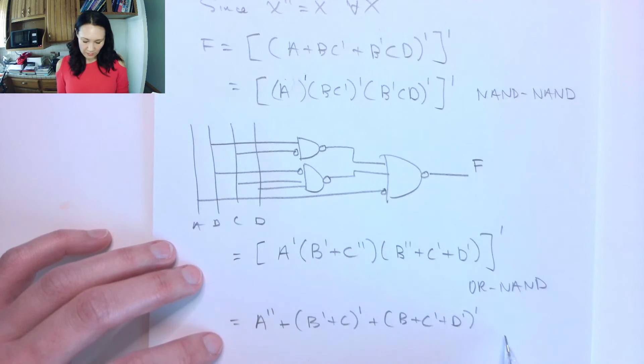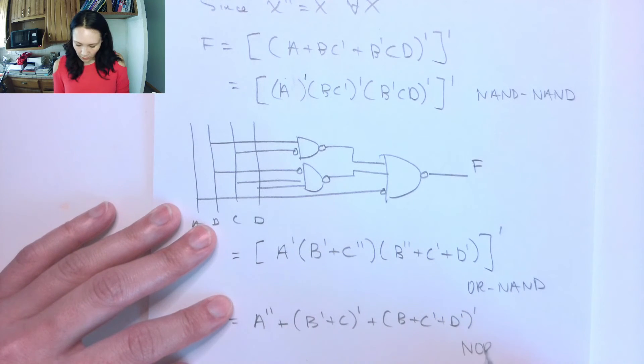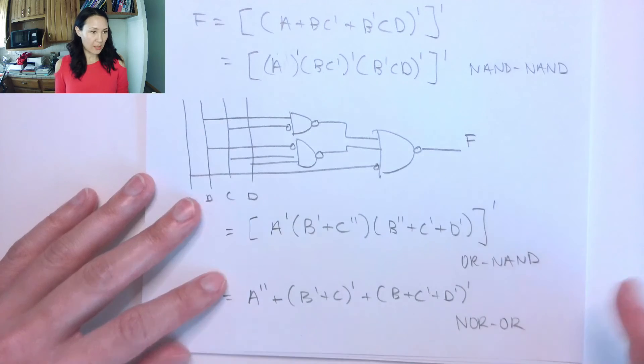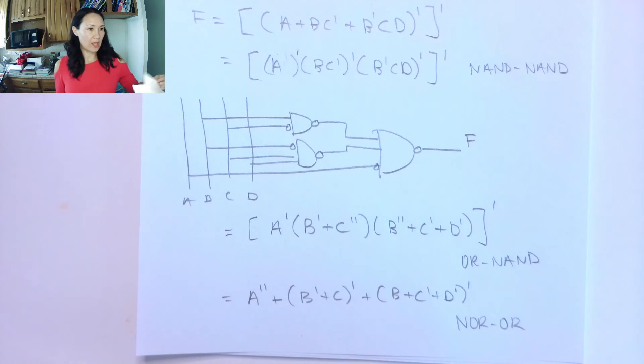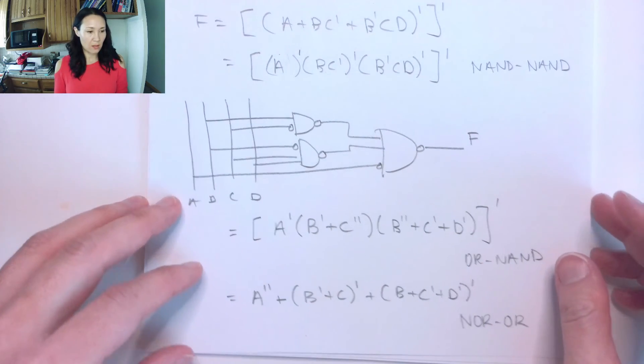So this implementation is now I have NOR gates, and that result is getting ORed. So this is a NOR OR implementation of my same circuit. And I got this from applying De Morgan's three times from my original given equation.